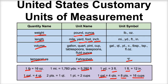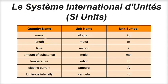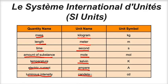Let's look again at the table of the seven SI units established in 1960 in France. Mass is measured in kilograms, length in meters, time in seconds, amount of substance in the mole, temperature in Kelvin, electric current in amps, and luminous intensity in candelas. You might wonder about volume — that's not one of the seven base units. Volume is a derived unit, which we'll look at next.